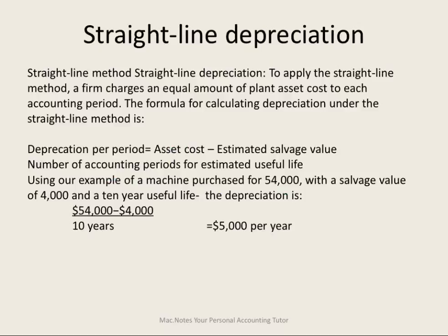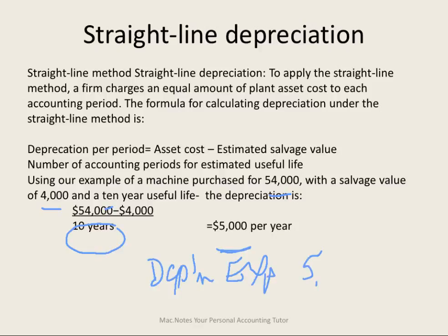For example, using the straight-line method: a company bought this asset for $54,000. It has a salvage value of $4,000 and a useful life of 10 years. Therefore, its depreciable value is $50,000, useful over 10 years. The depreciation recognized every year is $5,000. We record this as an adjusting entry: debit depreciation expense $5,000, credit accumulated depreciation $5,000. That's how we do it under straight line.